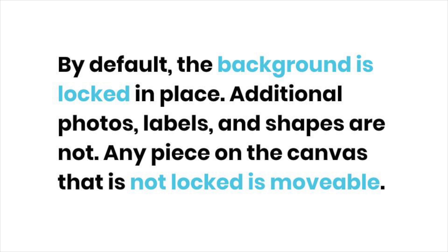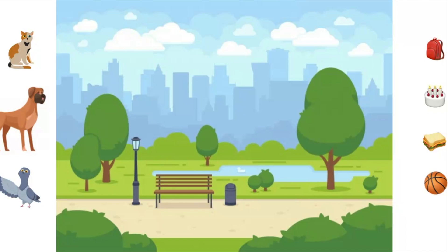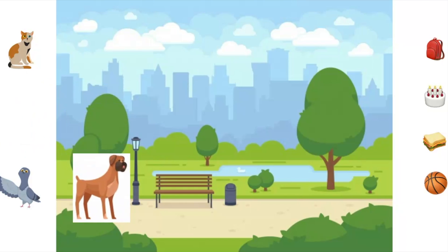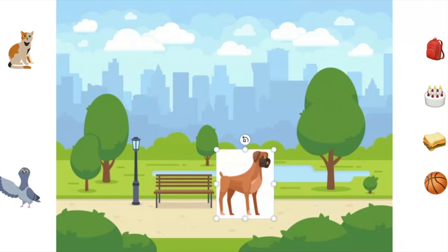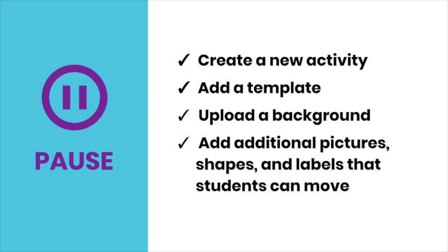Remember, these photos, shapes, and labels will be movable when you assign the activity. If you can move them when you're creating the template, students will be able to move them when they complete the activity. Here it is in action! Students drag and move the photos, shapes, and labels, but the background is locked in place. It's your turn to explore — pause the video and create your own template with movable pieces.